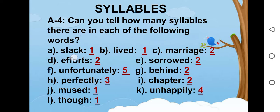A is slack. Slack is having one syllable. B is lived. Lived is having one syllable. C is marriage. This word has two syllables. D is efforts. This word has two syllables.